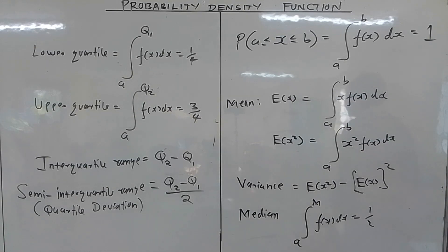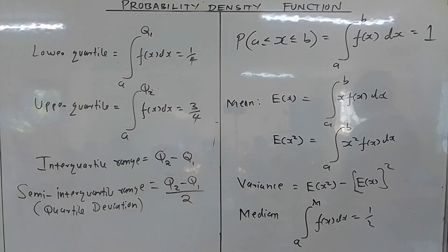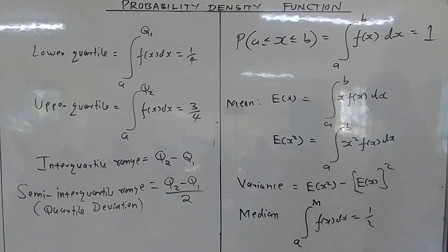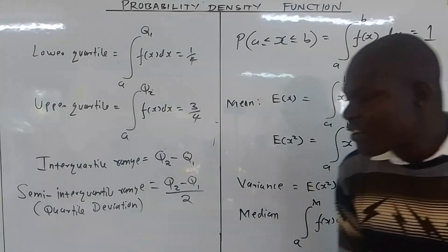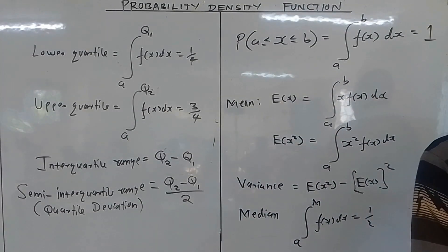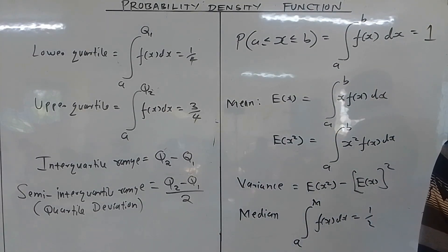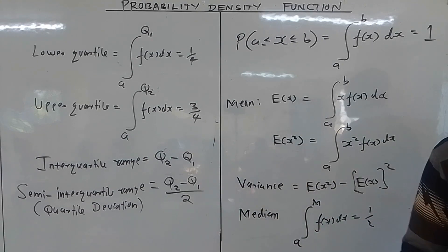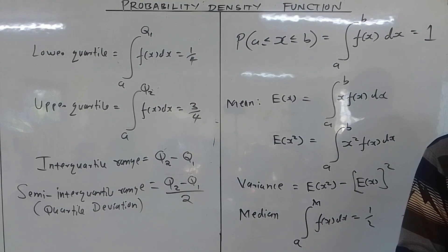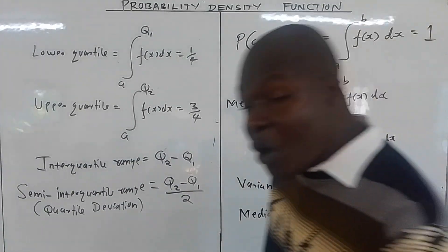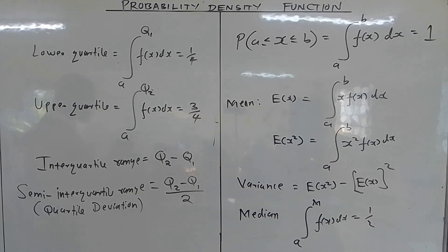In the measures of location we have the quartile deviation, and in the measures of dispersion we have the standard deviation. So the semi-interquartile range is given by that formula. We've now seen how to get the mean, the variance, the median, the lower quartile, the upper quartile, the interquartile range, and the quartile deviation. Since we know how to get the variance, the standard deviation is just the square root of the variance. The next thing is how to get the mode.